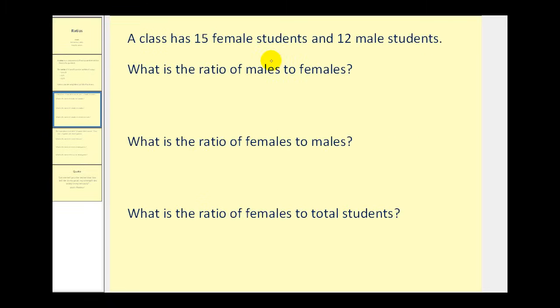A class has 15 female students and 12 male students. What is the ratio of males to females? One of the most important things about a ratio is its order. So here we want the ratio of males to females. Since there are 12 male students and 15 female students, the ratio would be 12 to 15, and I'm going to go ahead and write this in fraction form so it would be 12 to 15.